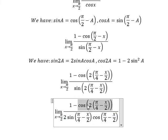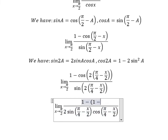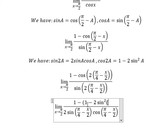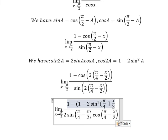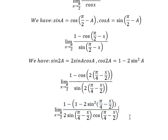This one we change to 1 minus 2 sine of π/4 minus x/2. So 1 minus 1 will cancel. Negative times negative gives us positive.